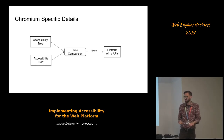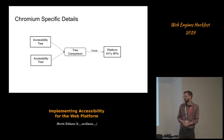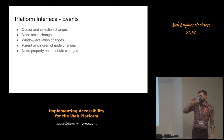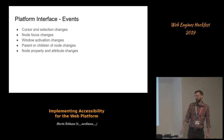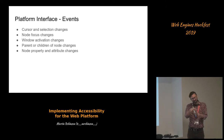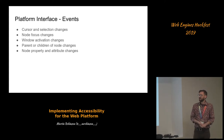For example: the content of my text changed, my children changed, my position moved. Those events are sent to the platform APIs. Some events come from outside the tree comparison — like a different node is focused, or a different window is activated — so it's a combination of both. Parent and children changes, property changes — these kinds of things are all sent as signals to the assistive technology.